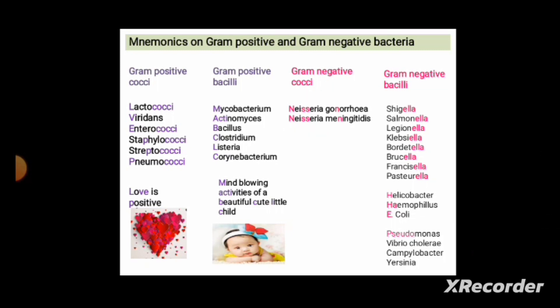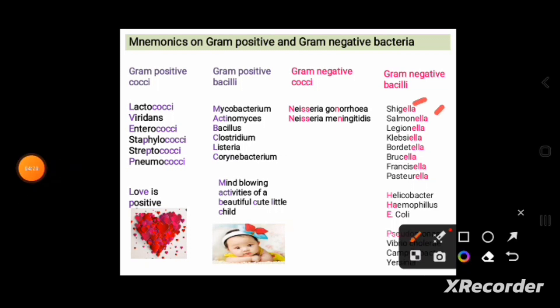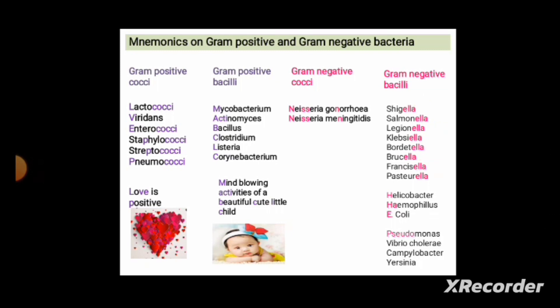Next is gram-negative bacilli. If the genus name of the bacteria ends with E-L-L-A, then the bacteria are gram-negative bacilli. For example: Shigella, Salmonella, Legionella, Klebsiella, Bordetella, Brucella, Francisella, and Pasteurella — all end with '-ella' and are gram-negative bacilli.